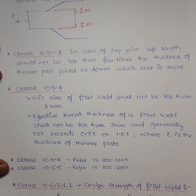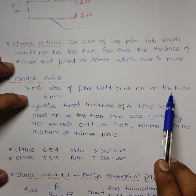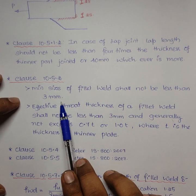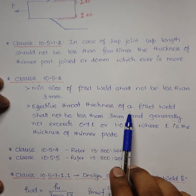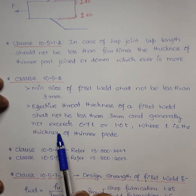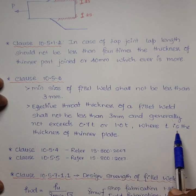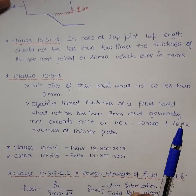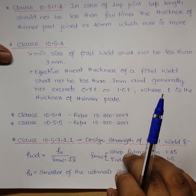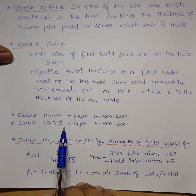Clause 10.5.2 states that the minimum size of the fillet weld shall not be less than 3 mm, and the effective throat thickness of the fillet weld shall not be less than 3 mm and generally not exceed 0.7t or 1t, where t is the thickness of the thinner plate. Please also refer to clauses 10.5.4 and 10.5.5 in your IS code book.